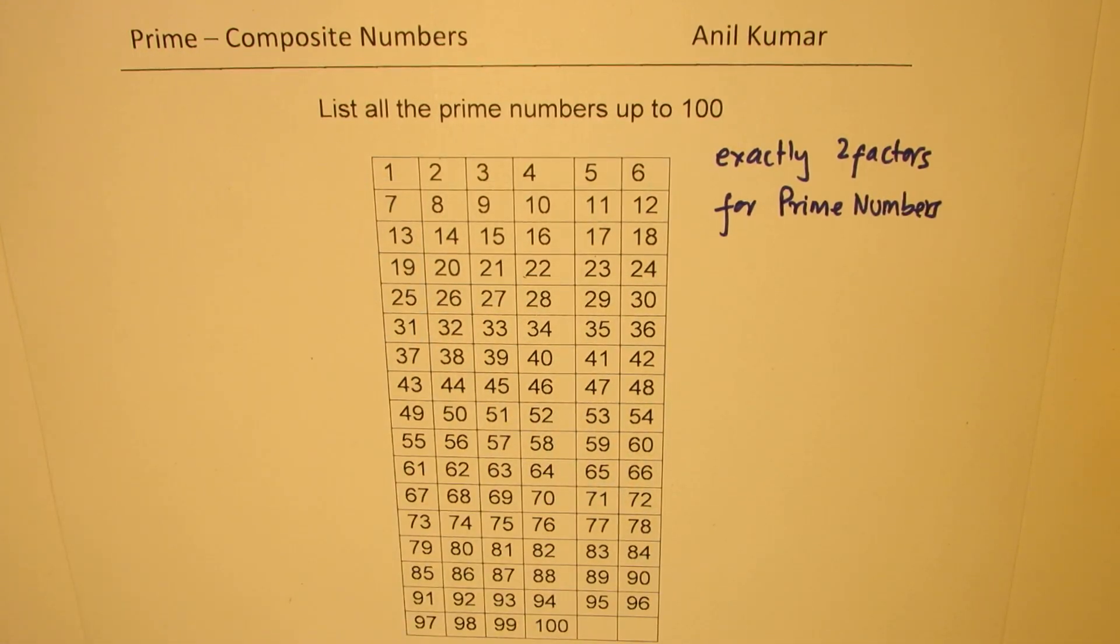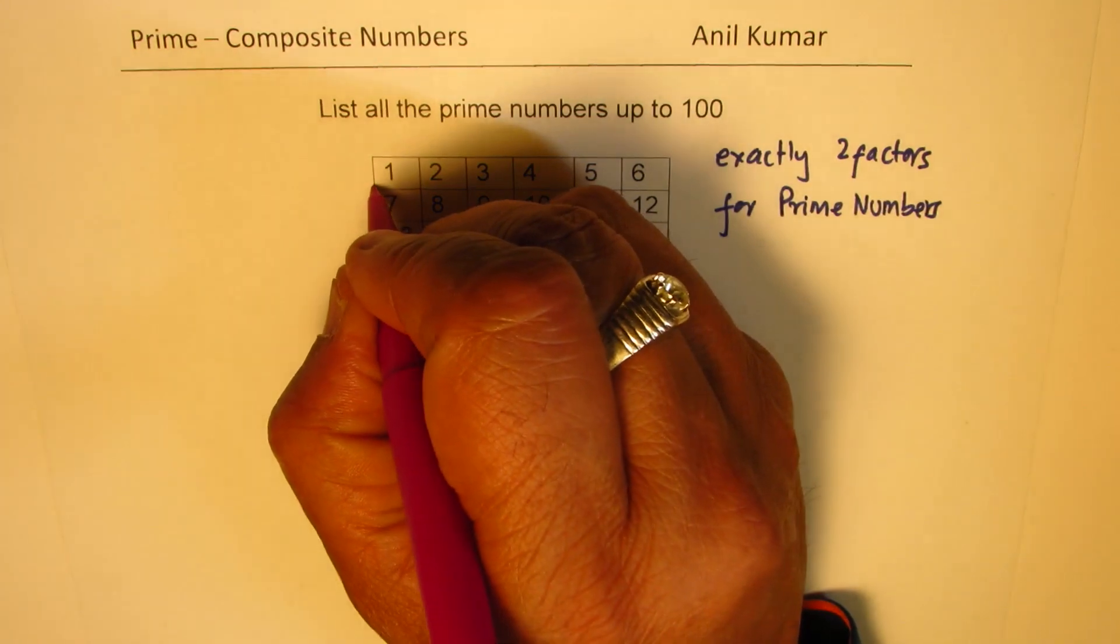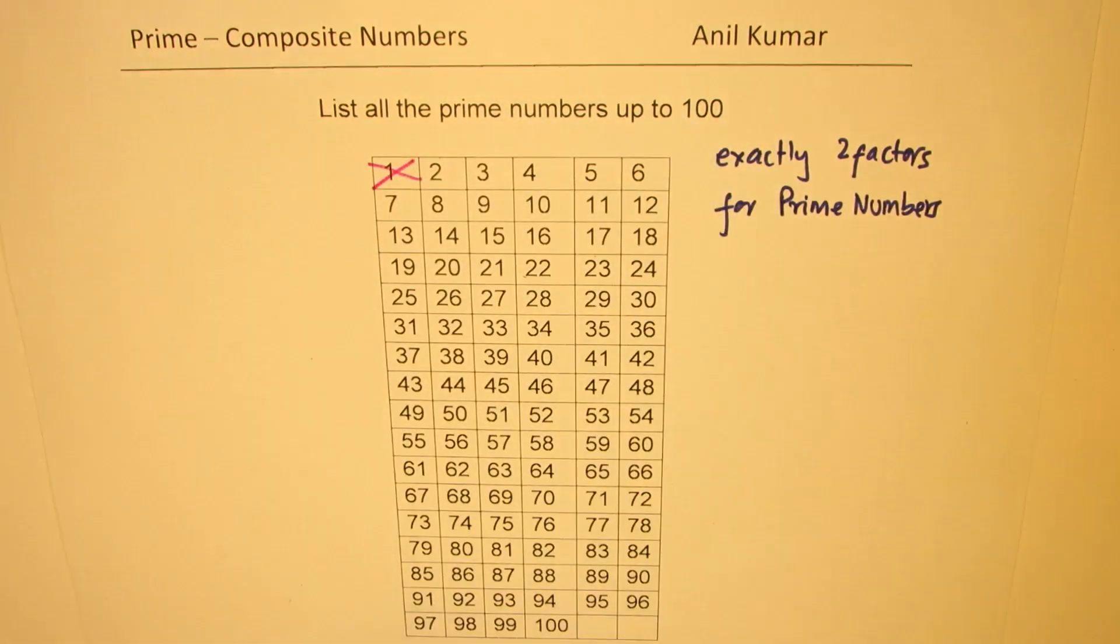one is not a prime number. One has only one factor and therefore we'll kind of cross this out. This is not a prime number.